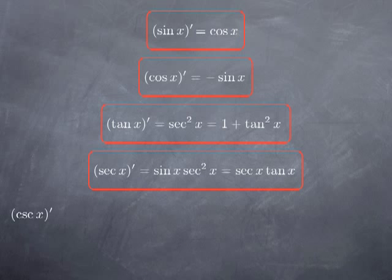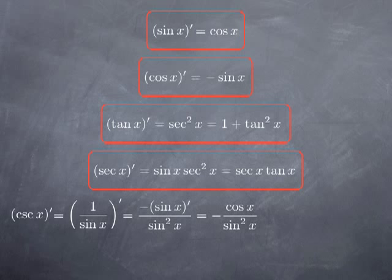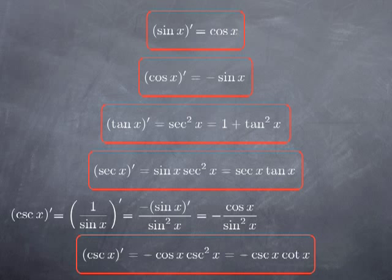What about cosecant? This works in exactly the same way, except that the role of cosine is now played by sine — cosecant is the reciprocal of sine. Using the quotient rule: the derivative of the top is 0, so we only get the opposite of the derivative of sine, divided by sine squared. Since the derivative of sine is cosine, we get negative cos x over sin²x, which we can write as either negative cos x times csc²x, or as negative csc x times cot x.